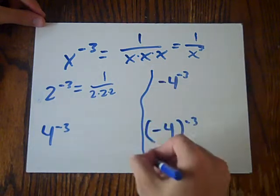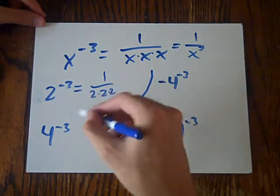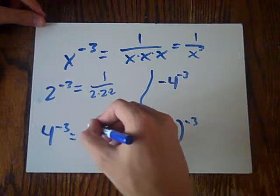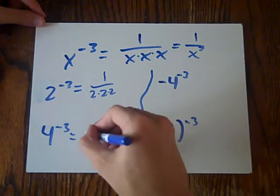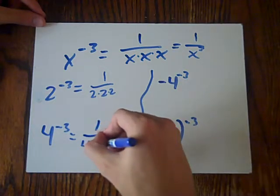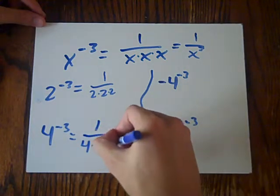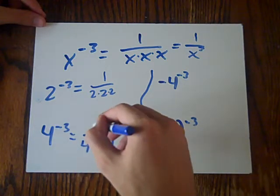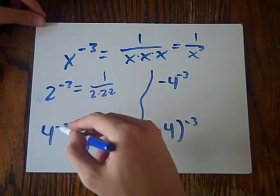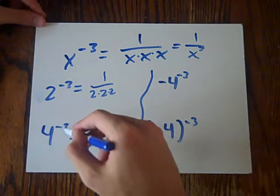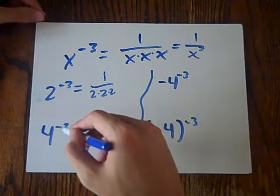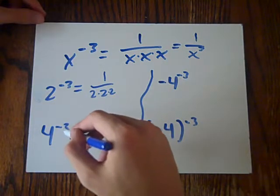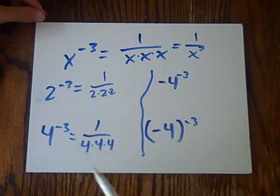So now we've got 4 to the power of negative 3, which is 4 times 4 times 4. Every time this happens, you put 3 under — every time there's a negative 3 as the exponent, that's what you do, you do this.